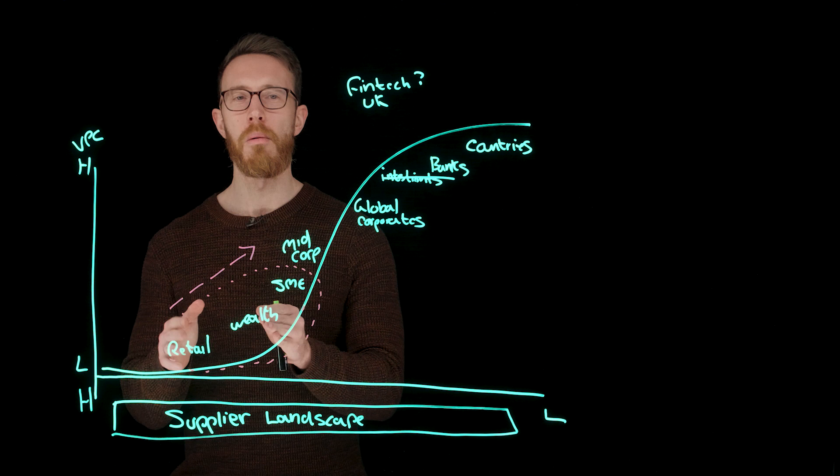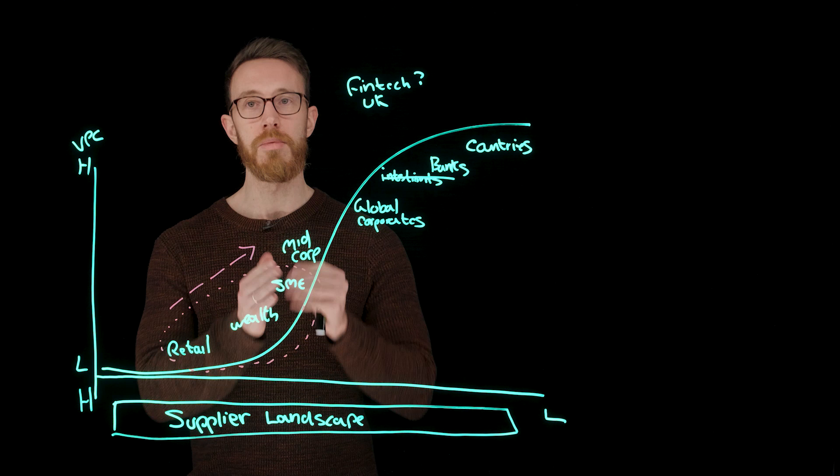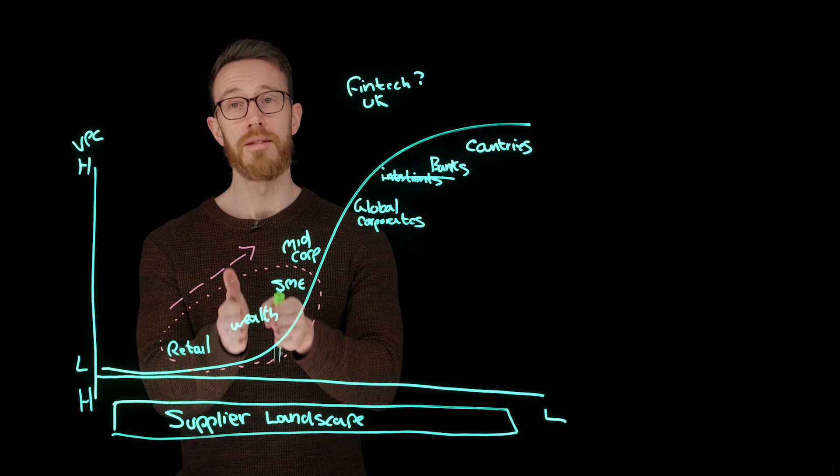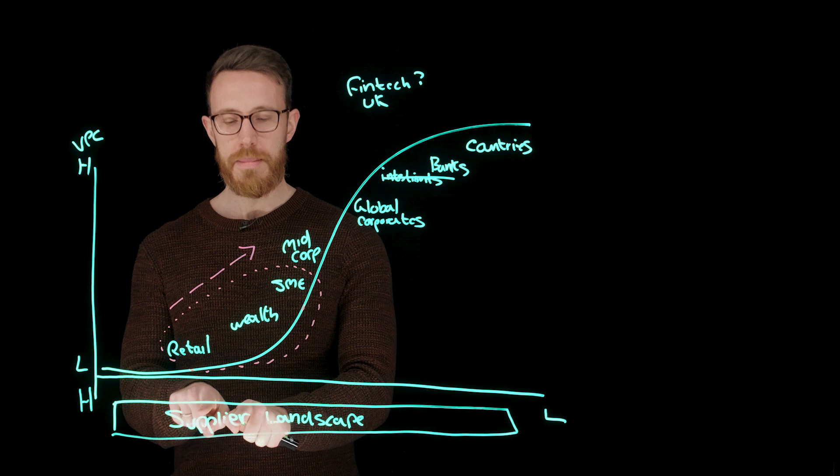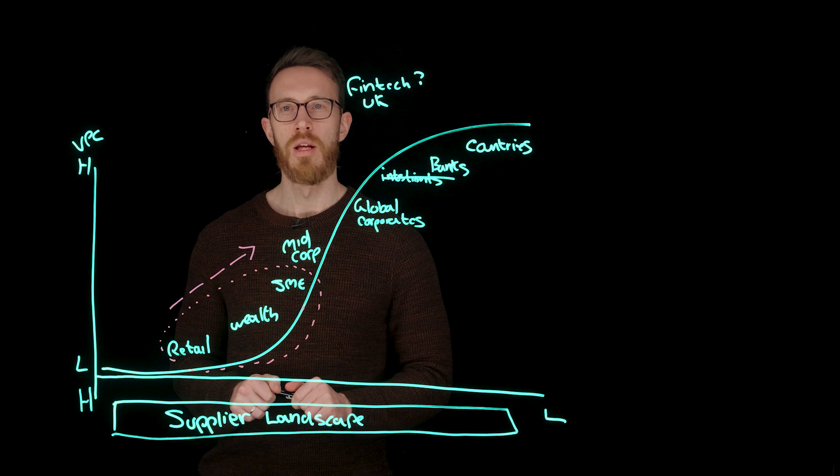If you think about who the challenger banks are using as their suppliers, they're probably not the same suppliers that are used by the incumbent banks. If you think about who the SME banks are using as their suppliers, they're probably not all of the same suppliers. If you think about who the players in the wealth space are starting to use, it might not necessarily be the same suppliers as the ones used by their incumbents. That's really interesting. What's happening in this B2B fintech space is another area to really start to play.